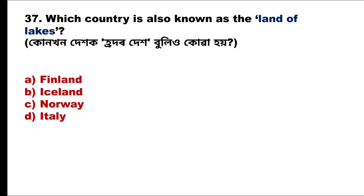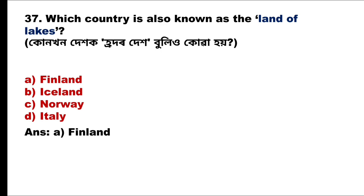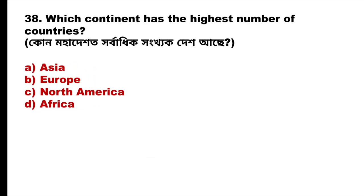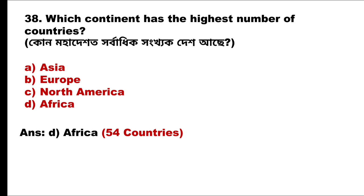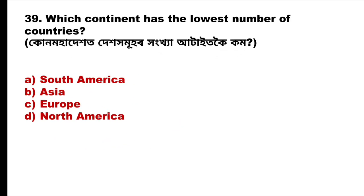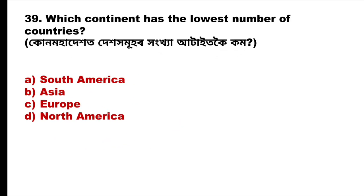Question 37: Which country is also known as the land of lakes? The answer is option A, Finland. Question 38: Which continent has the highest number of countries? The answer is option D, Africa, with 54 countries.